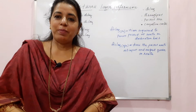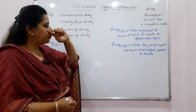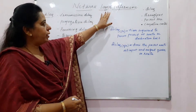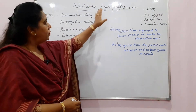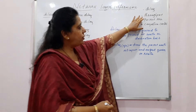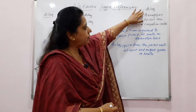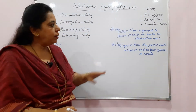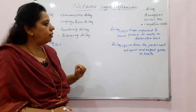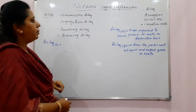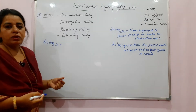Welcome back to my channel. If you want to measure the performance of any particular layer, you need to have some attributes. For the network layer, the four different factors through which we can decide the performance are delay, throughput, packet loss, and congestion control. In fact, congestion control is a mechanism to improve the performance.